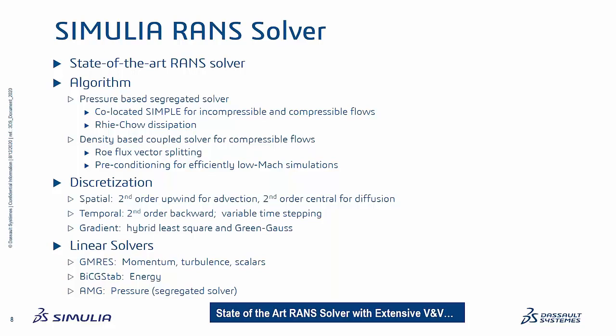There are two different algorithms the user can select depending on the application: a pressure-based segregated solver for both incompressible and compressible flows, and a density-based formulation for compressible flows with a preconditioner that enables efficient solution down to low Mach numbers. The solver is essentially second order in both space and time. The linear solution is enabled by GMRES for momentum, turbulence, and scalars; conjugate gradient stabilized method for energy; and AMG for pressure for the segregated solver.